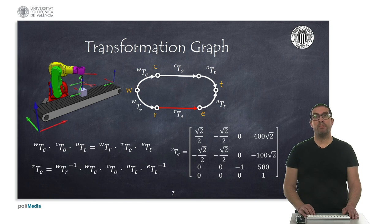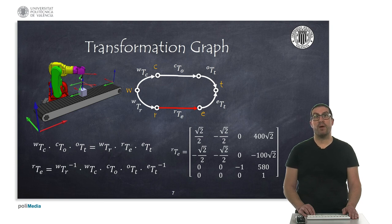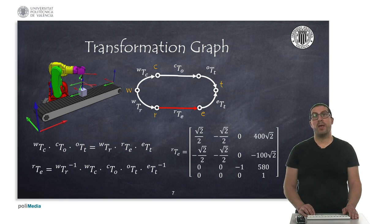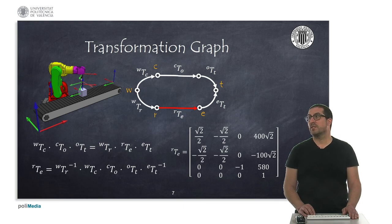As you can see, we can compute the tool position to pick the object in two different ways. On one hand, we can compute it from the robot's frame through the end effector to the tool frame. On the other hand, we can compute it from the conveyor belt, through the object frame and again to the tool frame. This poses an equation where the unknown transformation is T_re, and with the right algebraic operations we can obtain the numerical results of these transformations.